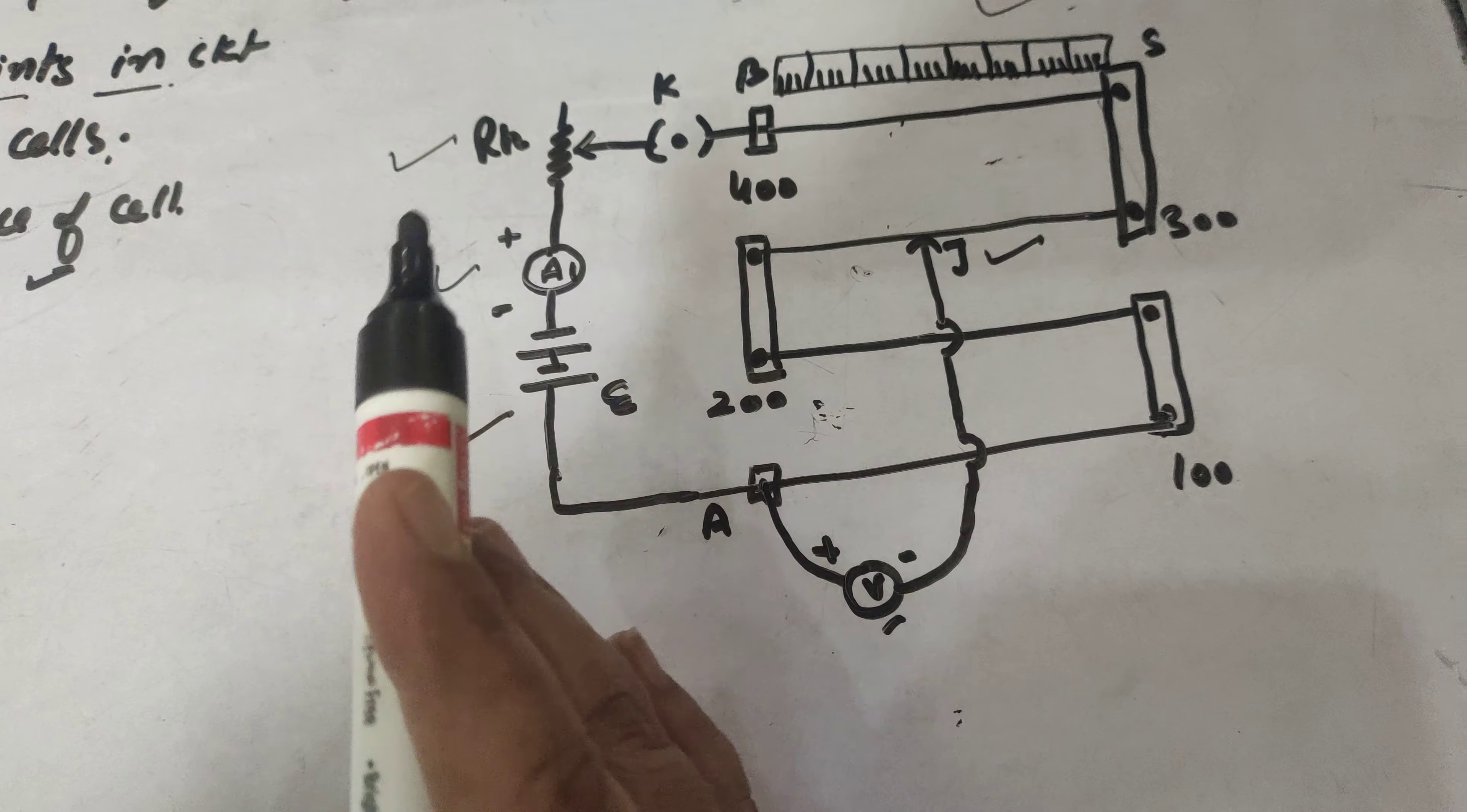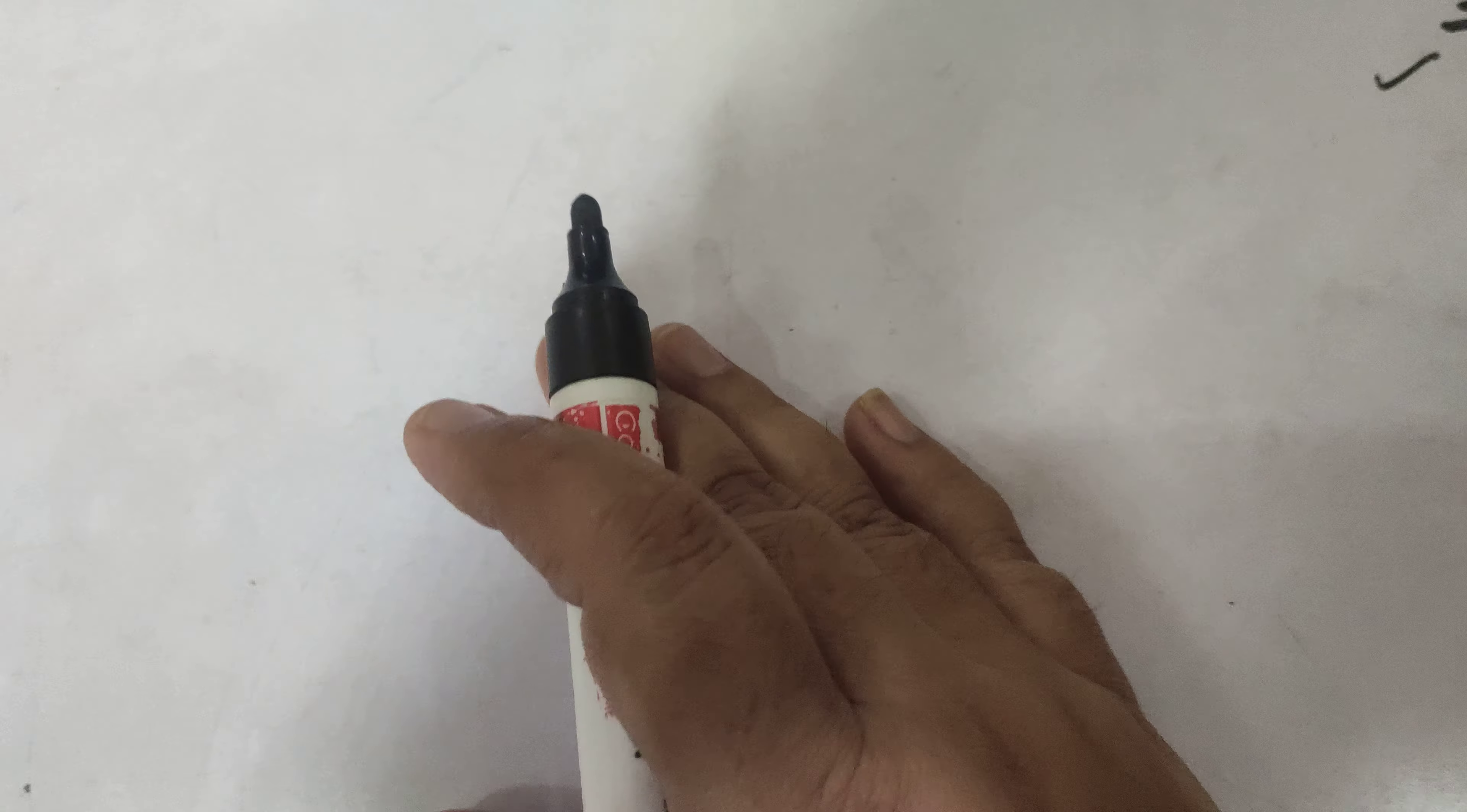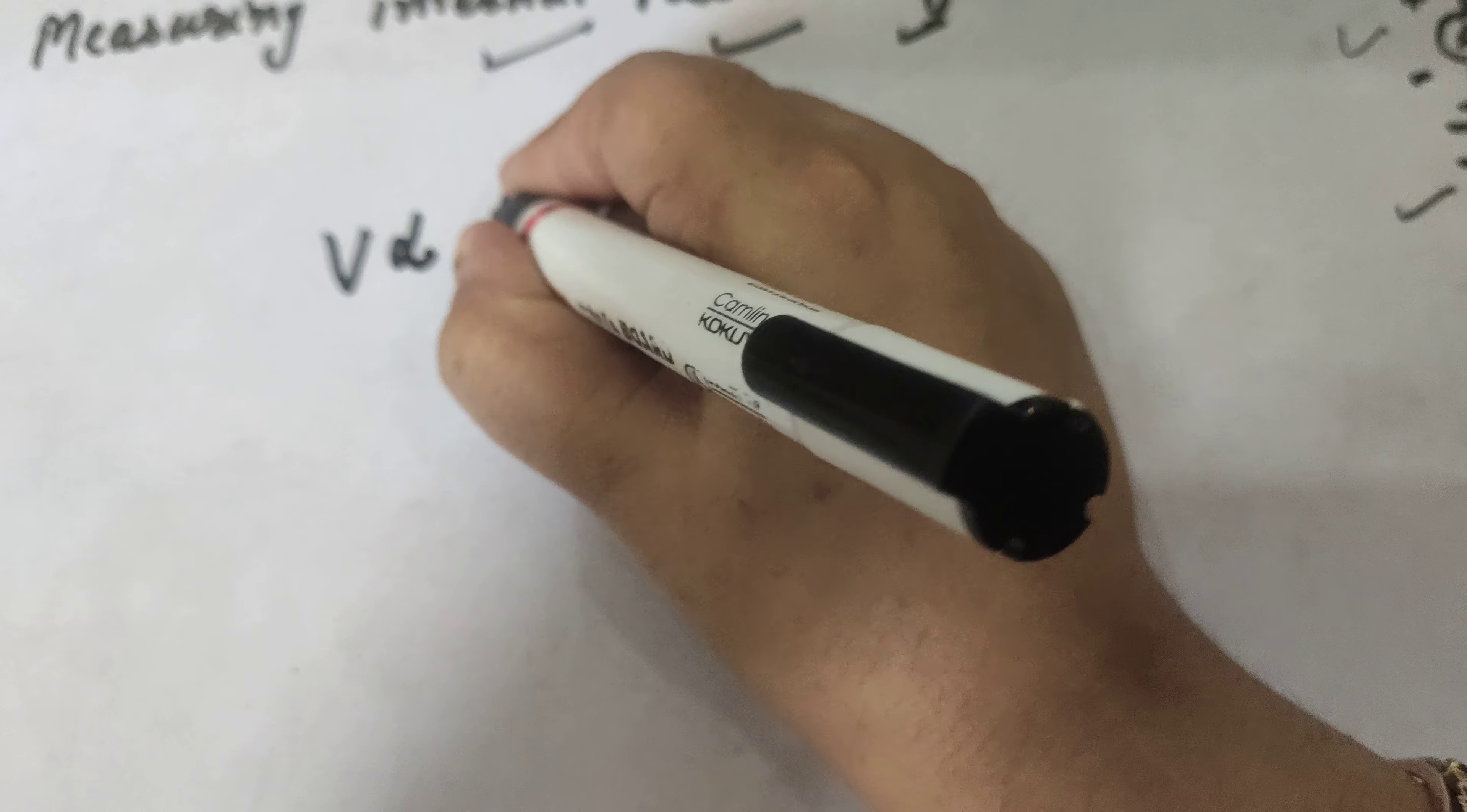Now what is the basic working principle? The fall of potential across any portion of the wire is directly proportional to the length of the wire.